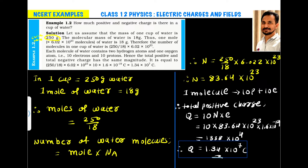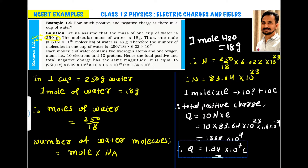If we find out how many water molecules are in a cup of water, we can find the total positive and total negative charge. One cup contains 250 grams of water. We know that one mole of H₂O is always equal to 18 grams.